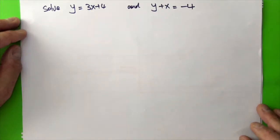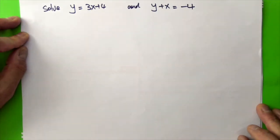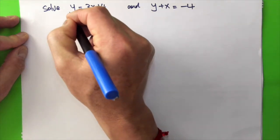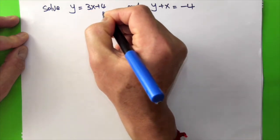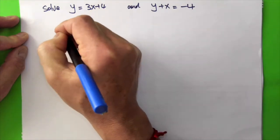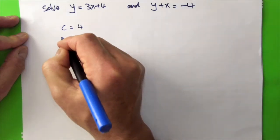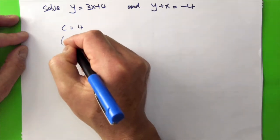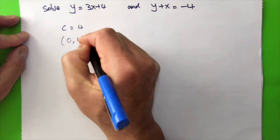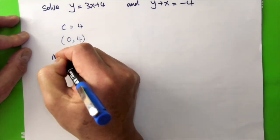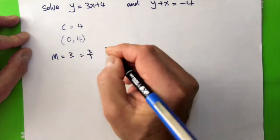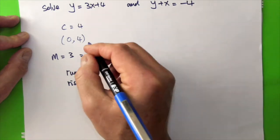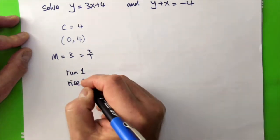Now let's look at how we can plot the two graphs. For y equals 3x plus 4, it's fairly straightforward. We know that the intercept c equals 4. Therefore, the line passes through the y-axis when x equals 0 and y equals 4. And m is 3, which is 3 over 1. Therefore, it is a run of 1 and rise of 3.